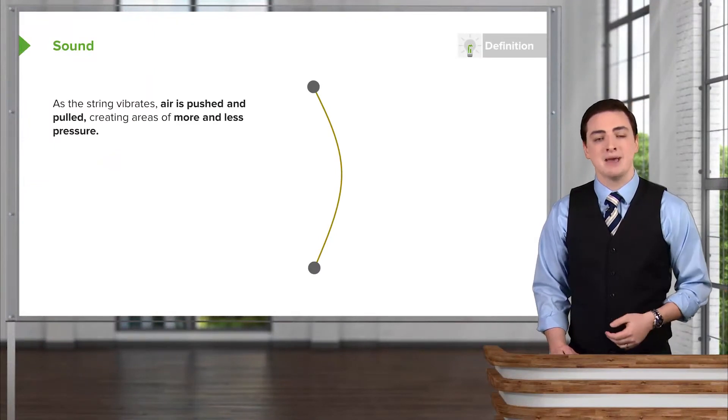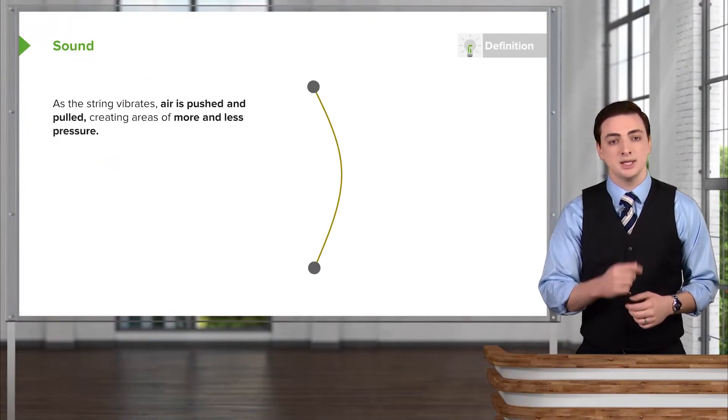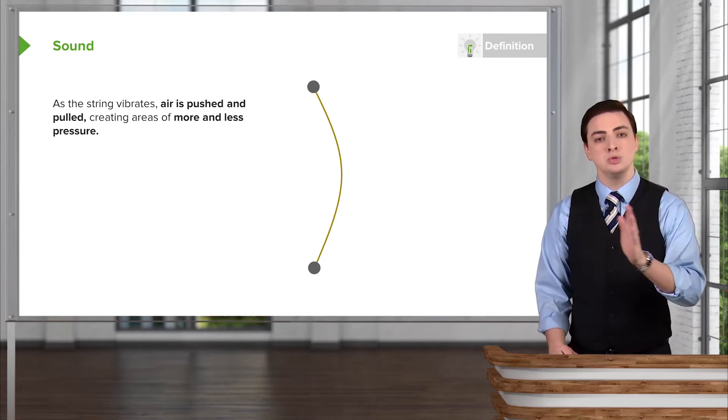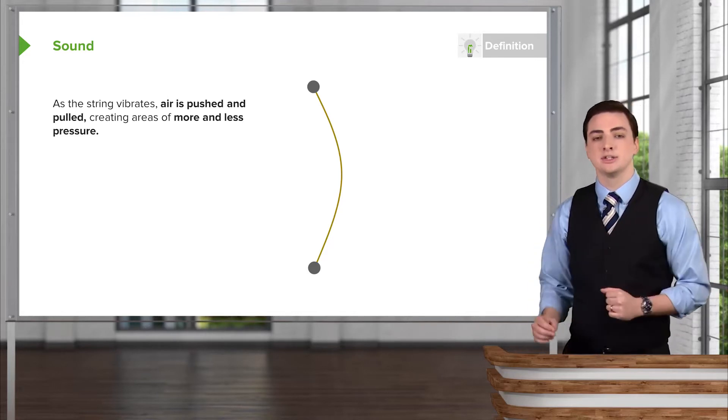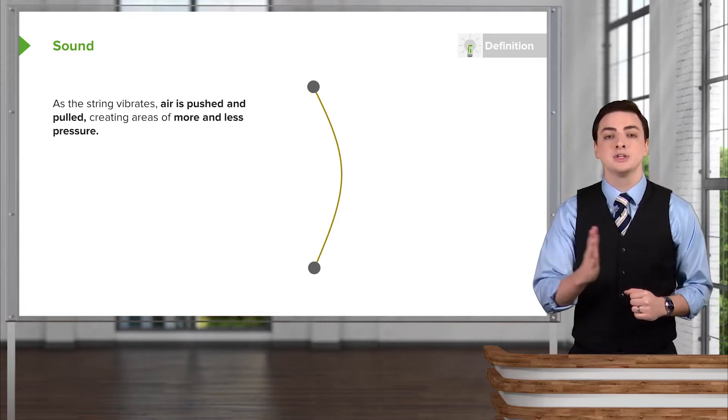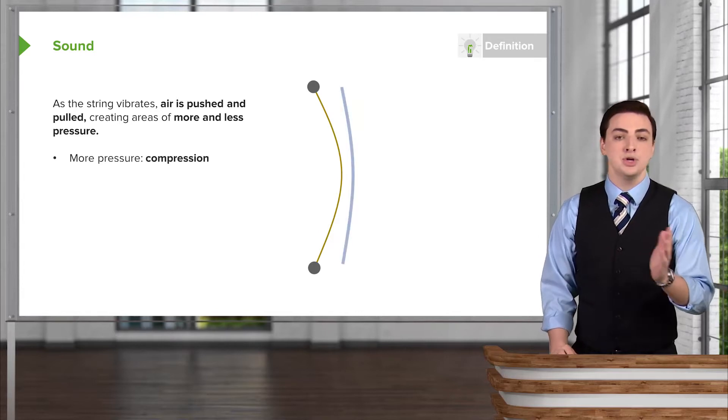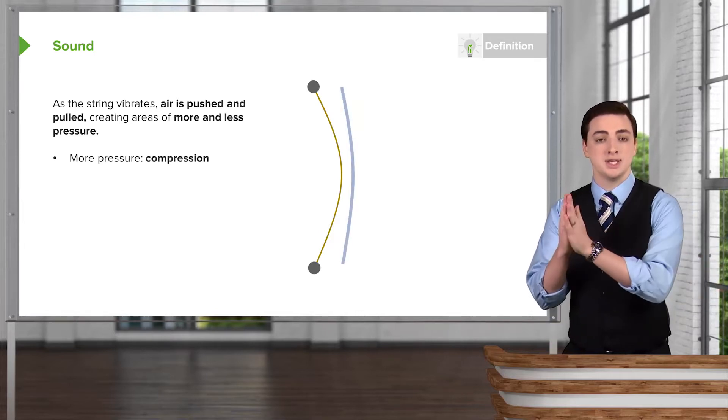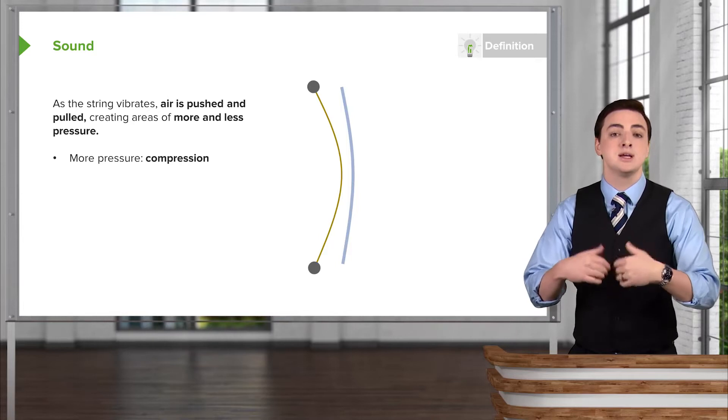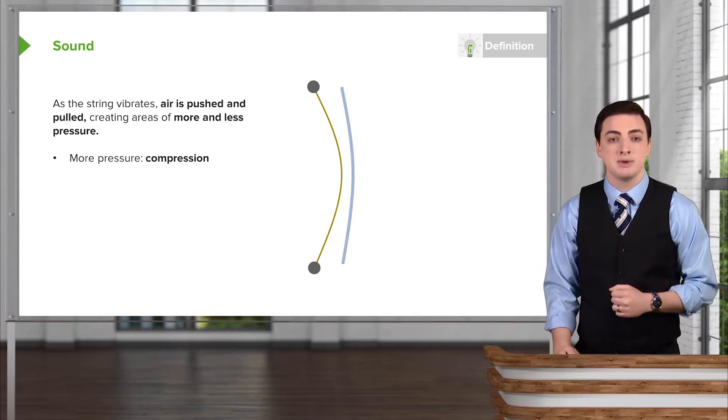We can imagine a guitar string. We grab the string and pluck it. As it moves from left to right, pinned at the bottom and top, it's going to vibrate and move left to right. As it does that, it pushes the air as it moves towards the air and compresses the air—we call it a compression. This is a compressed amount of air.